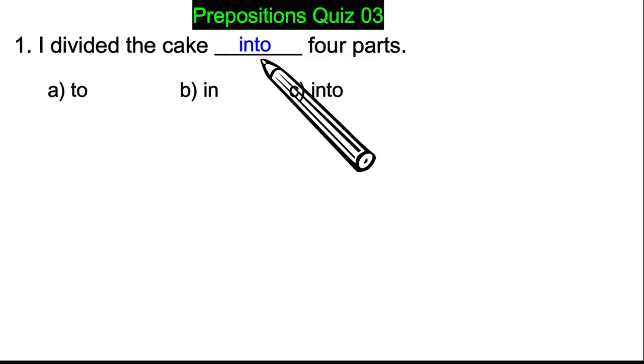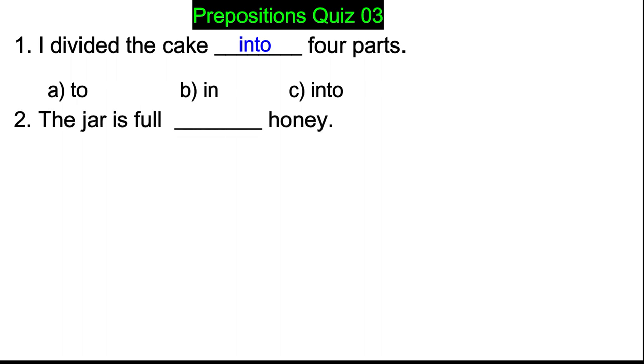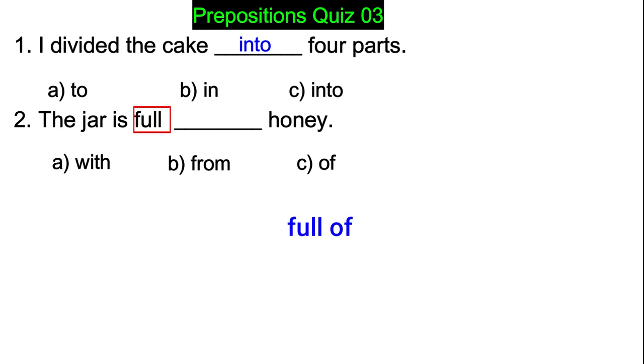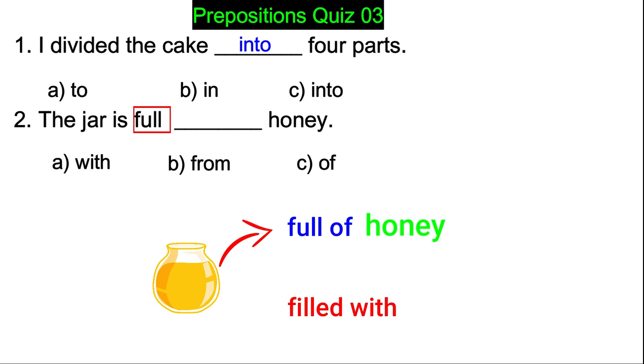The jar is full blank honey - with, from, or of? In this sentence the keyword is full. We always say full of but filled with. So this jar is full of honey, or we can say this jar is filled with honey. So full takes of.